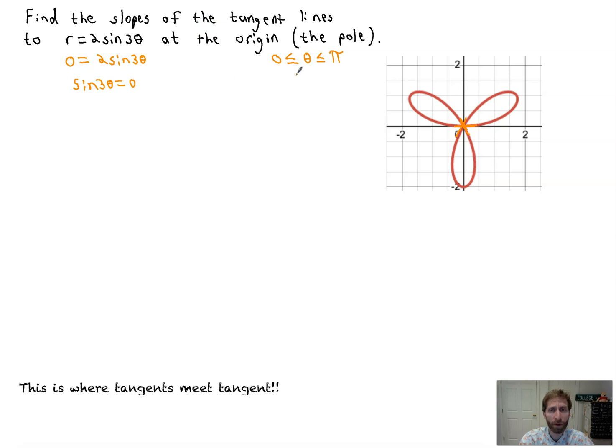Okay, so sine of 3θ equals zero. I'm going to use my handy-dandy unit circle up in my noggin here to solve this out. We've got zero, π/2, π, 3π/2, and 2π. Now, sine of 3θ equals zero, that'd be the same as saying 3θ is equal to, when is sine zero? At zero, at π, and again at 2π.